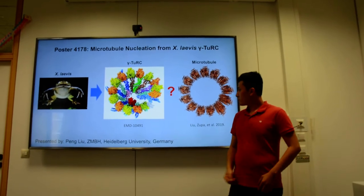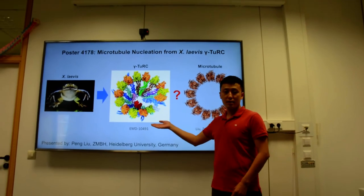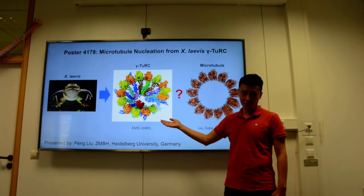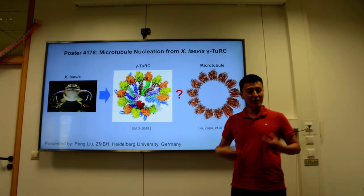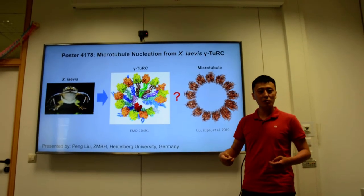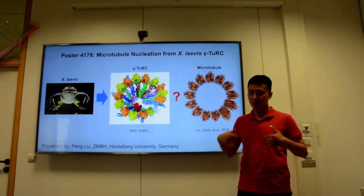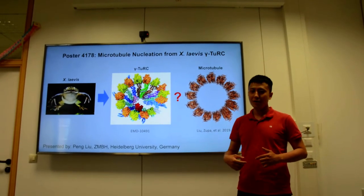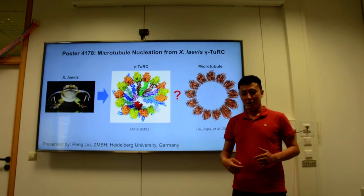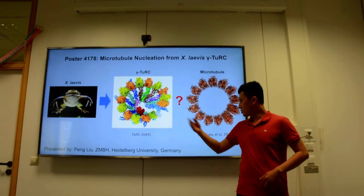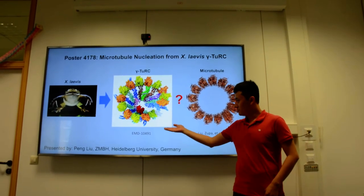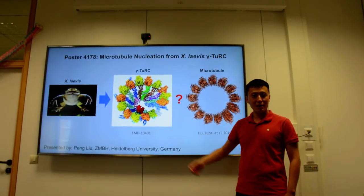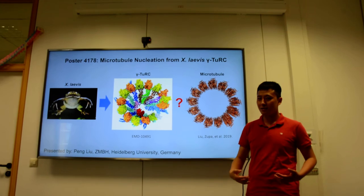From the structure, we can see the organization of different components of the γ-TuRC. But we have many more exciting and surprising findings from the structure. For example, we found one actin molecule in the γ-TuRC. So where is the actin here, and what is the function of actin in the γ-TuRC?